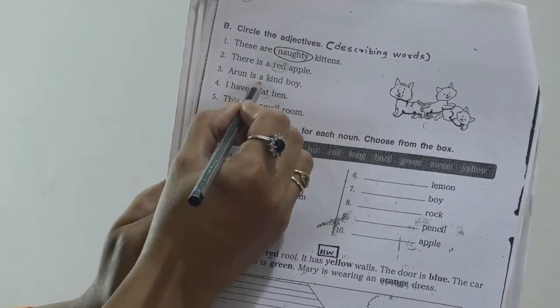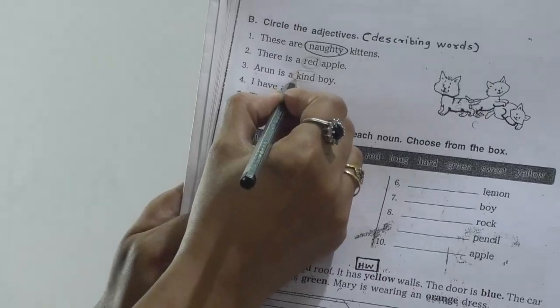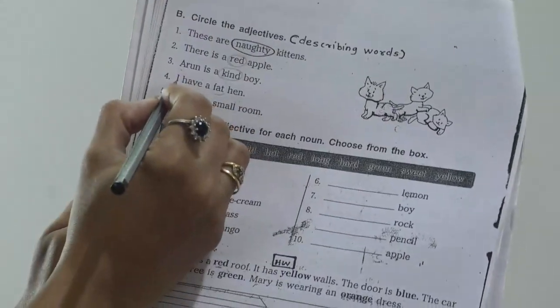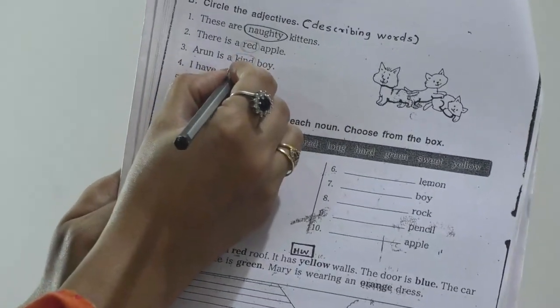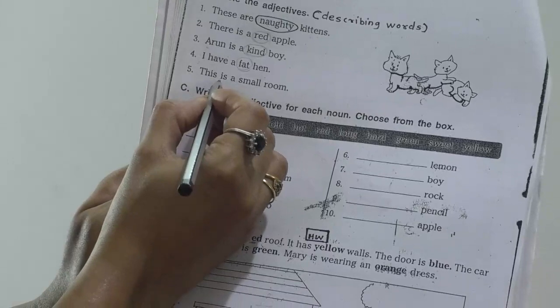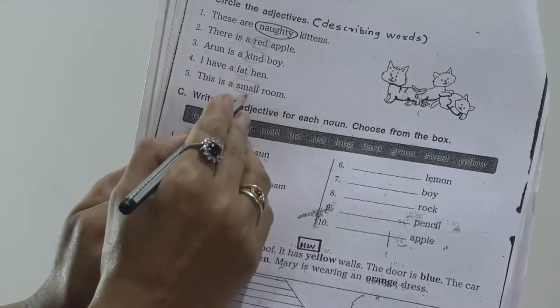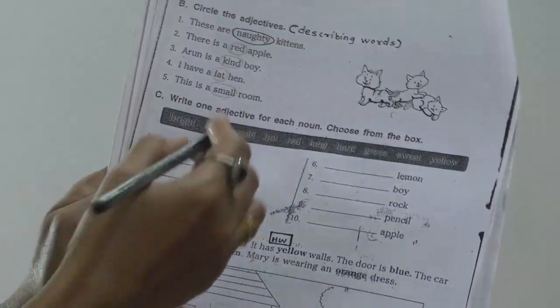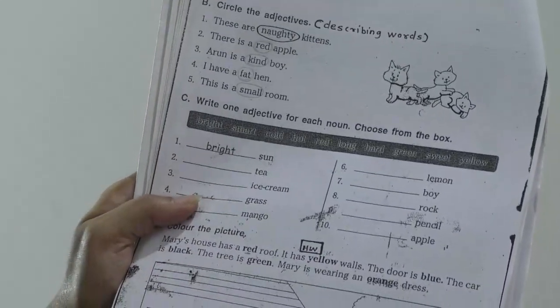Next, Arun is a kind boy. How is Arun? He is kind. Here the behavior of Arun they told by using adjective kind. I have a fat hen. Hen is a noun. Fat is an adjective. Next, this is a small room. Small is an adjective. They told about the room, the area. These 5 examples you have to write in your notebook.